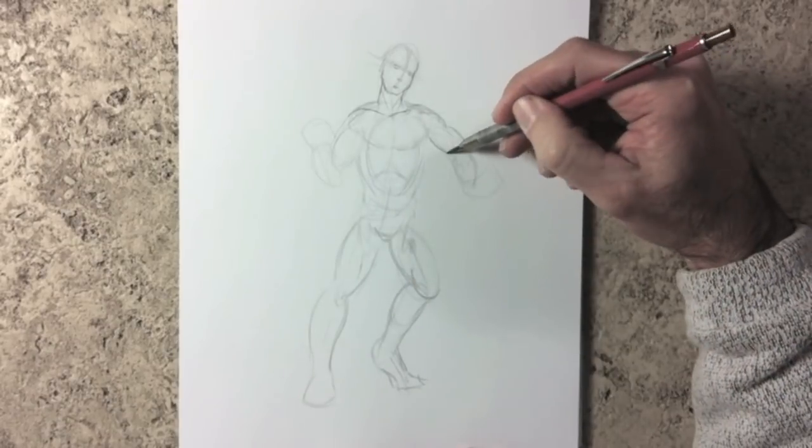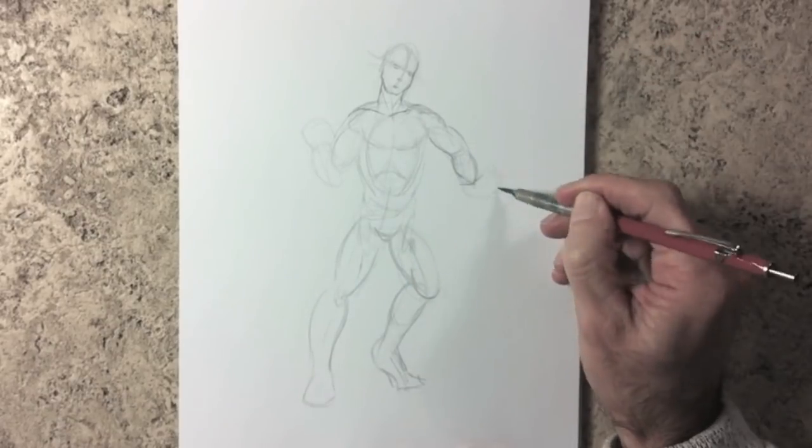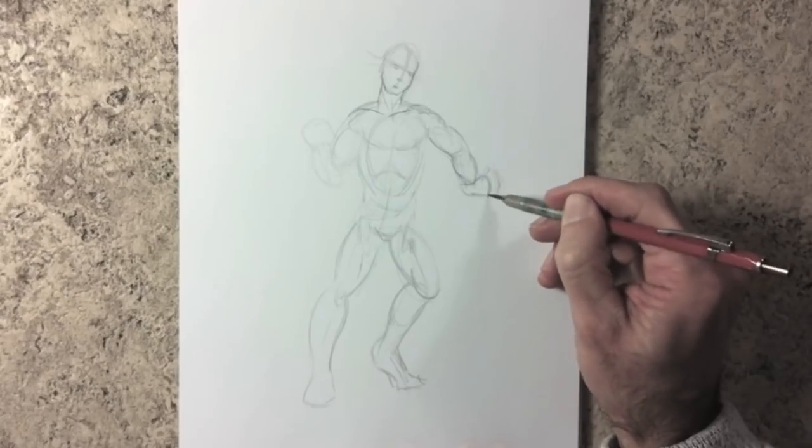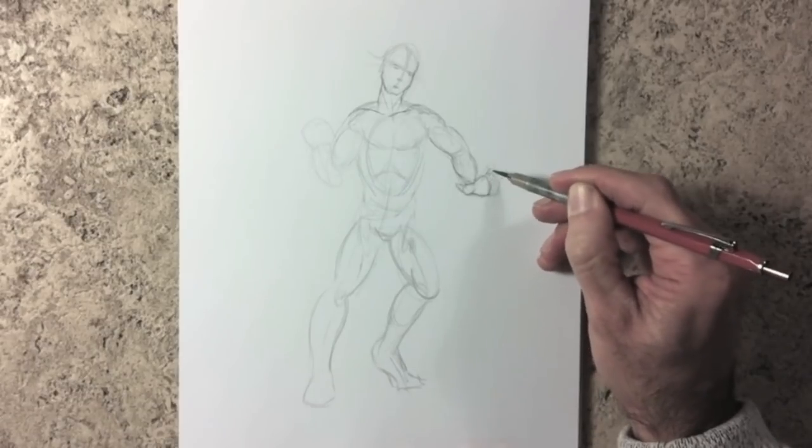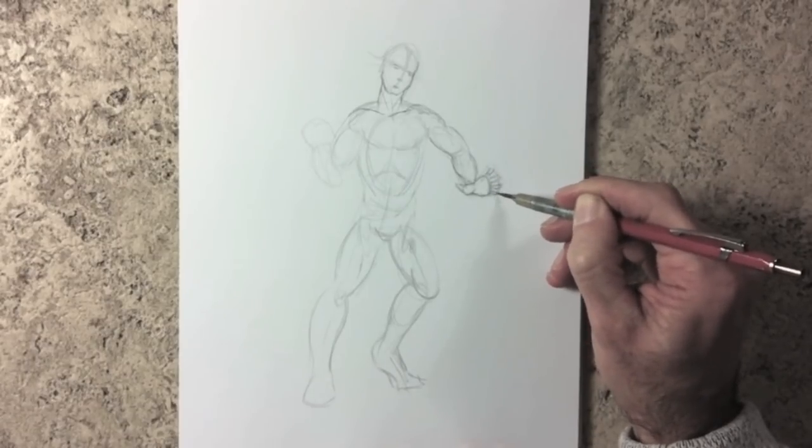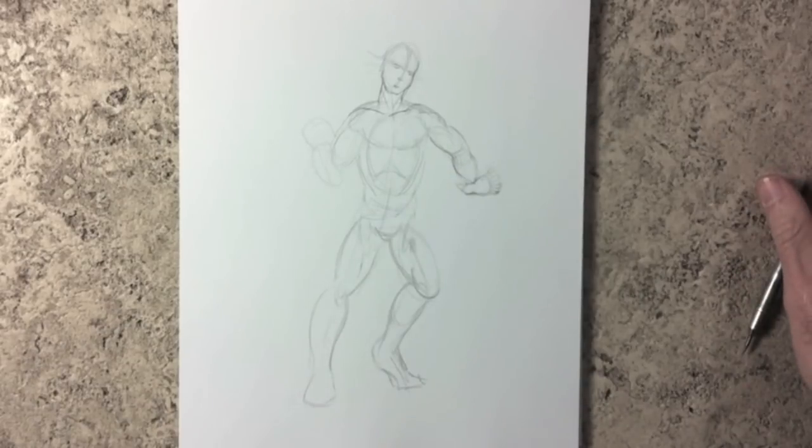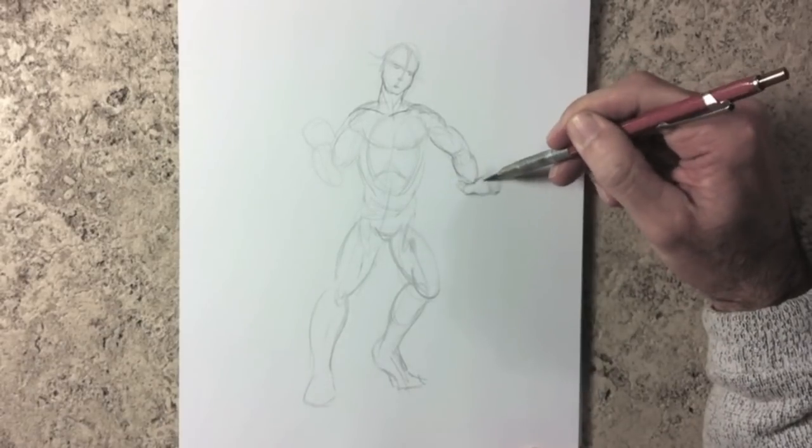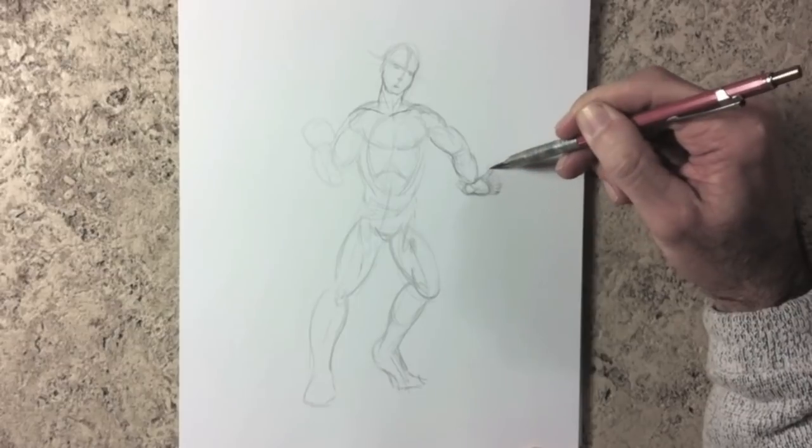For the hands I recommend doing an overall shape first, then mark where the knuckles go, where it can bend, and then the fingers. At the end of this video I'm going to place the link for my tutorial on how to draw hands.